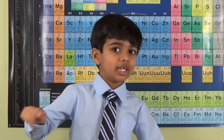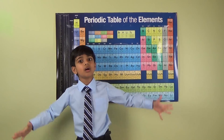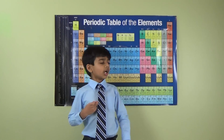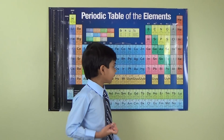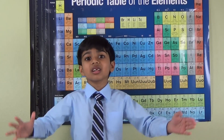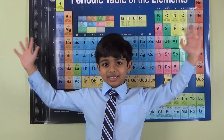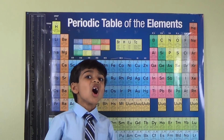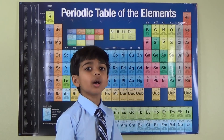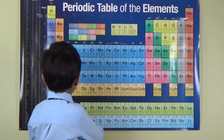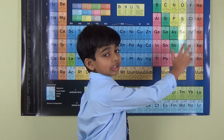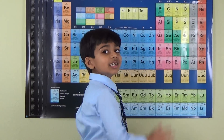The symbol Og comes from the first two letters of Oganesson — very simple. Now, period seven of the periodic table is now complete. Which means all the others, from 119 and above, would come up in an upcoming row in the periodic table of elements.